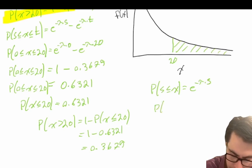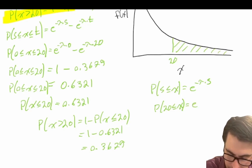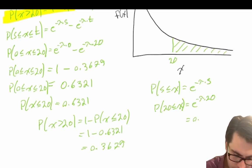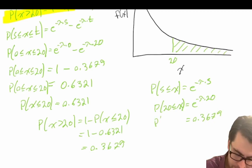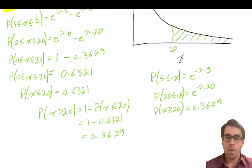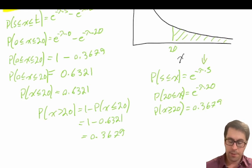The other way is to use the shortcut: the probability that s is less than or equal to x equals e to the power of negative lambda times s. So the probability that x is greater than or equal to 20 equals e to the power of negative 0.05 times 20, which gives us 0.3679 — exactly the same answer. There's a long way using the complement and a short way using this formula directly.